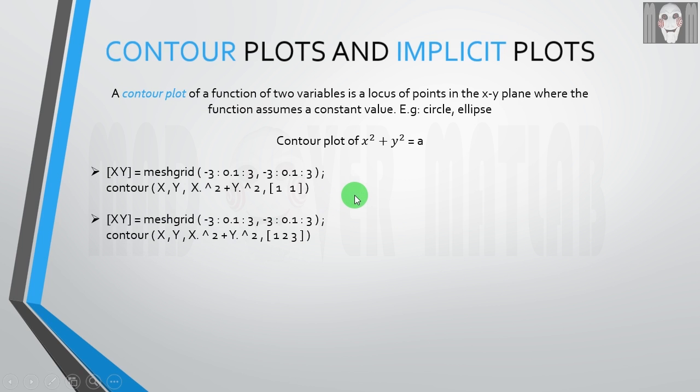Now let us see how to plot multiple curves or multiple contours. First you have to create a grid as in the previous case. After that, you need to write this contour function. Where you have written this in the previous case, you have to write the constants of the curves that you want. In the first case, you only had one curve which had the constant 1, but now you need three different curves which are having constants as 1, 2, and 3.